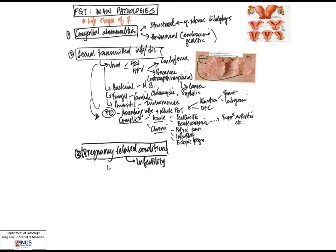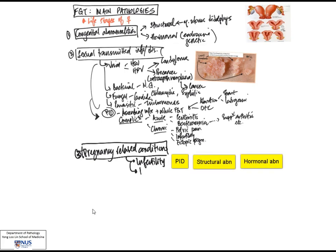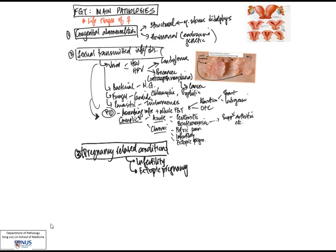The next group of conditions are pregnancy-related. These include infertility — remember that pelvic inflammatory disease, because of adhesions and destruction of tissue such as in tubal ovarian abscess, can give rise to infertility, which can also be due to structural congenital abnormalities or hormonal abnormalities. Then there is ectopic pregnancy, where the fertilized egg implants in the wrong place, quite often in the fallopian tube. This is important because it may predispose the patient to acute abdomen if the ectopic pregnancy erodes through the wall, causing rupture or bleeding.